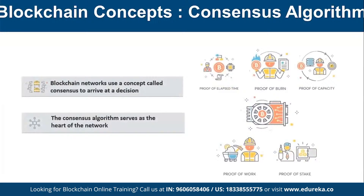Whenever there is any decision to make — for example, authorizing data and determining whether it's trustworthy — blockchain uses a concept called consensus. There are different kinds of consensus algorithms: consensus is essentially an agreement between parties that data is correct. Internally, blockchain uses a lot of cryptography algorithms including encryption, decryption, digital signatures, hash keys, and hash algorithms.